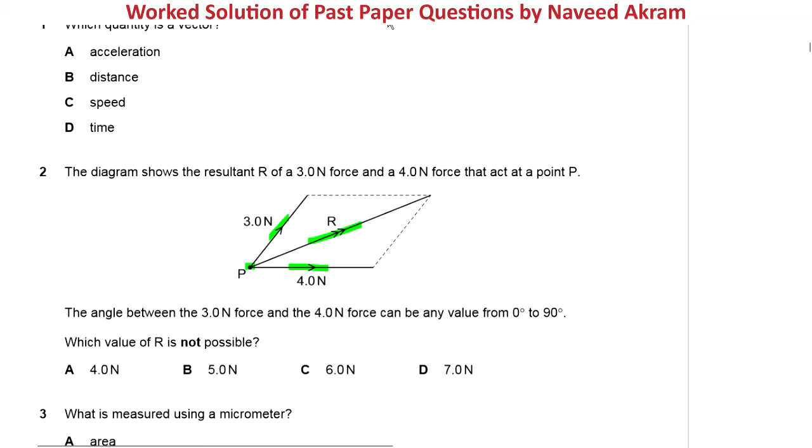The angle between the 3 Newton force and the 4 Newton force can be any value from 0 degree to 90 degree. And we have to tell which value of R is not possible. The angle between 3 Newton and 4 Newton force is not fixed. It can be any value from 0 degree to 90 degree.